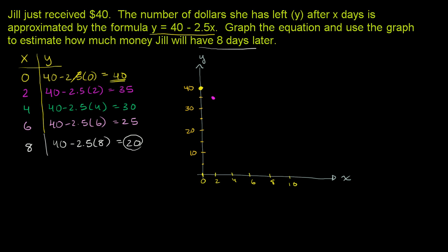Then after four days, she has $30. Four days, $30. She'd go x4. Remember, the days are in x, or x are the days. These are days, and the y-axis is the dollar axis. So after four days, she has $30.